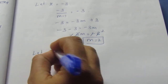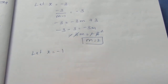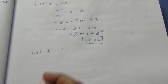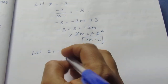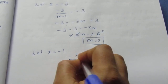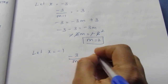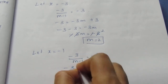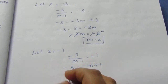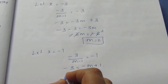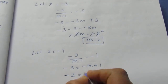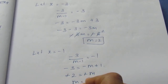Let x = -1. Then -3/(m - 1) = -1, so -3 = -m + 1, giving -2 = -m, so m = 2. Both x = -1 and m = 2 are integers, so this is valid.